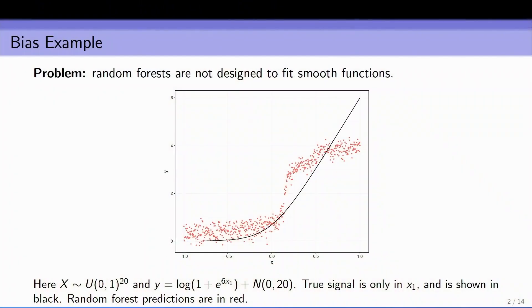We all love random forests. They're an incredibly powerful prediction method — they win all kinds of contests and they're pretty easy to use with minimal tuning. But they do suffer from a pretty large problem which emerges when you try to fit something kind of smooth. You can see that in this simulation: we've generated data in 20 dimensions, put some signal in one coordinate, and the forest basically just fit a step function to this curve, ending up with really bad predictions.